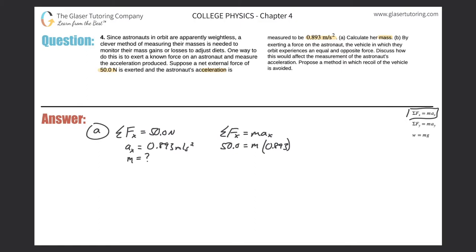Sound like hell's angels outside. So we have an acceleration of 0.893. So to find the mass, just divide out the 0.893 from both sides, 0.893. That cancels, and now the mass is...